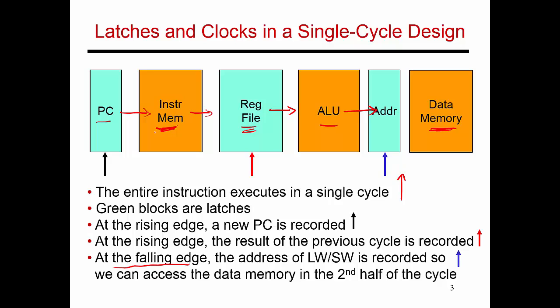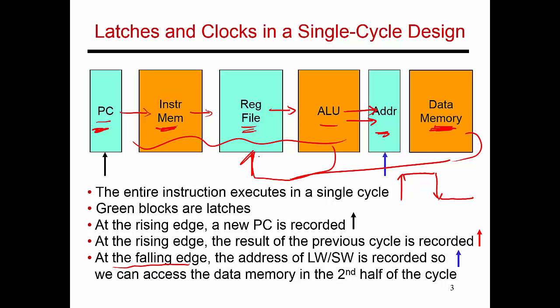At the rising clock edge, the PC is updated — that's a stable input, so you can do all of the subsequent work in the next half cycle. Then at the falling edge, the value that comes out of the ALU gets latched in this register. That serves as a stable input for the remaining half cycle, where I fetch something from data memory. Once a result has been produced from data memory or from the ALU, that value gets written into the register file at the next rising clock edge. So there are only three clock signals: one to the latch triggered by the falling edge, and then the program counter and register file both update at every rising clock edge.